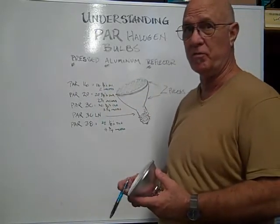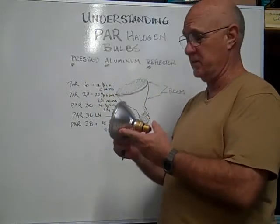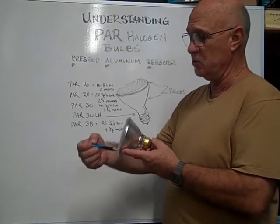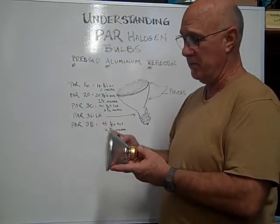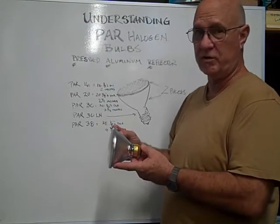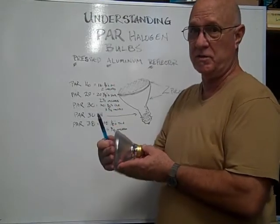When they say pressed aluminum reflector, it's two pieces. The lens is one piece, and the base and the reflector are the other piece, and they're pressed and welded together, so to speak.